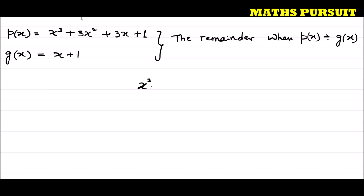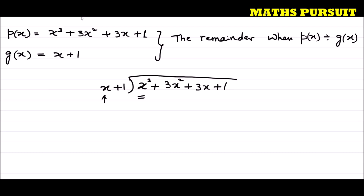The dividend, P(x), is x³ + 3x² + 3x + 1, and the divisor, G(x), is x + 1. Here we have x³. What should I multiply to x so that I get x³? If I multiply x² by x, I get x³. So let us multiply x² by x and by 1. x² × x = x³, and x² × 1 = x².